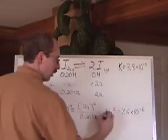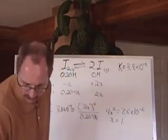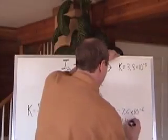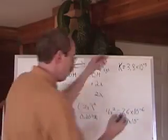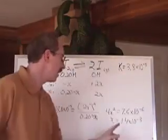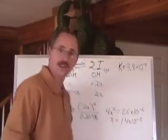And so when you do that math there, x equals 1.4 times 10 to the negative 3. That's the value for x! Cool! So that's our answer.